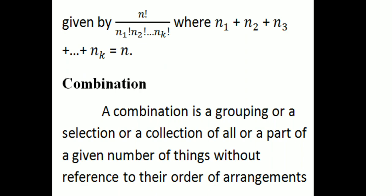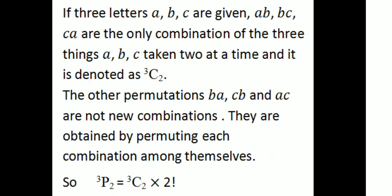Now, combination. A combination is a grouping, selection, or collection of all or part of a given number of things without reference to the order of arrangement. If three letters A, B, C are given, then A,B,C and C,A are the only combinations of the three — not permutations.